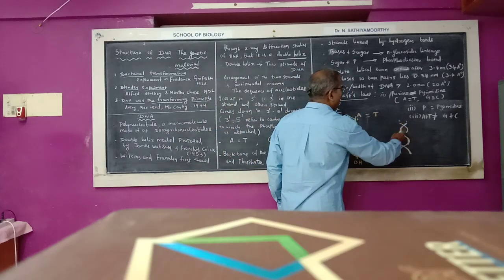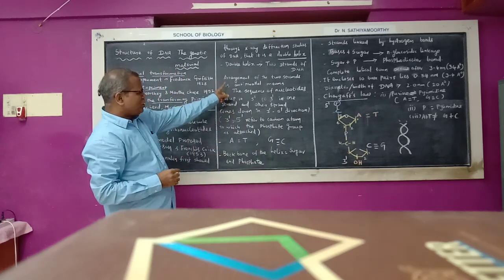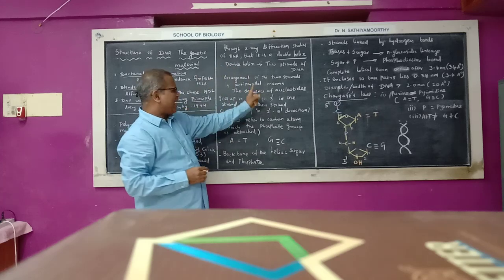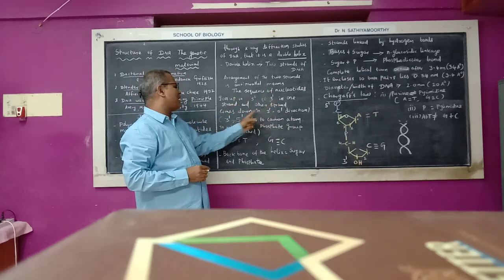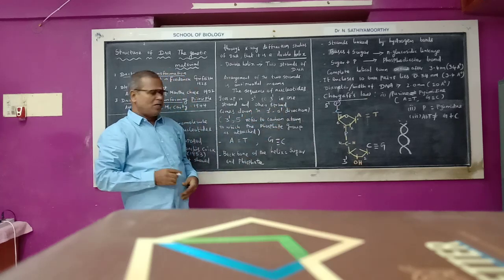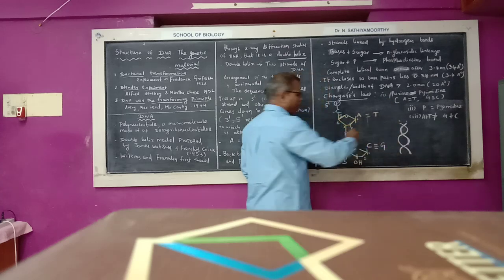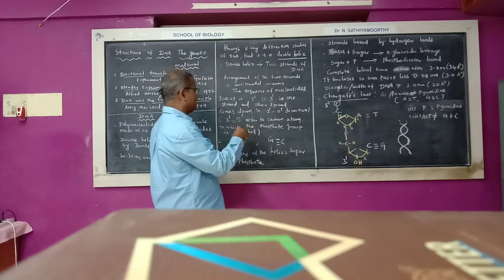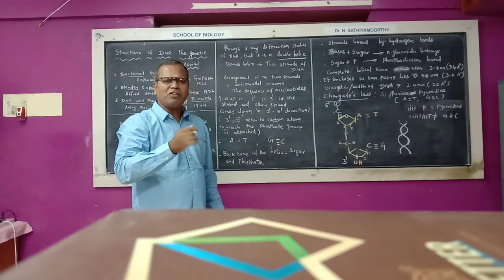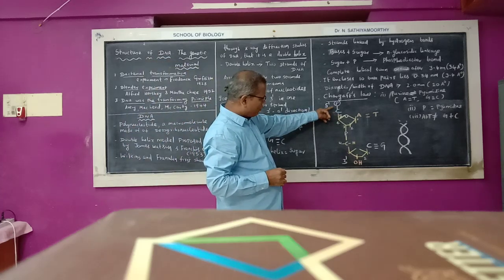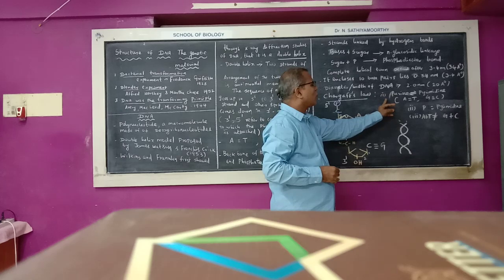The two strands of DNA are always anti-parallel in nature. Anti-parallel means the sequence of nucleotides goes in the 5' to 3' direction in one strand, and in the other strand it goes in the 3' to 5' direction. The 5' and 3' represent the carbon atom to which the phosphate group or the hydroxyl group is attached.